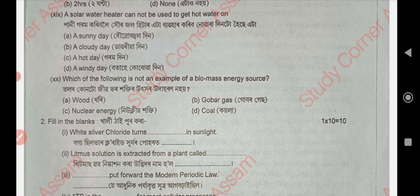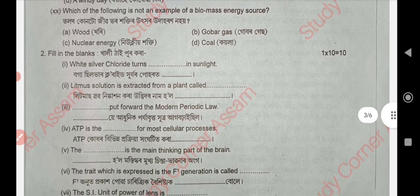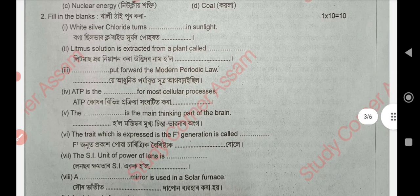Next, question number two — fill in the blanks: White silver chloride turns grey/dark in sunlight. That is, when silver chloride is exposed to sunlight, silver and chloride are produced.